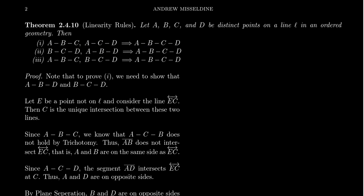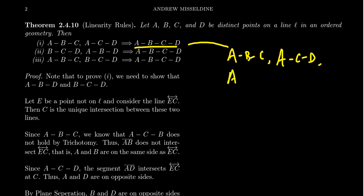Now this might seem obvious at first, but what does the statement A-B-C-D even mean? It actually means four betweenness relations. This four-element betweenness means that B is between A and C, that C is between A and D, that B is between A and D, and also that C is between B and D.